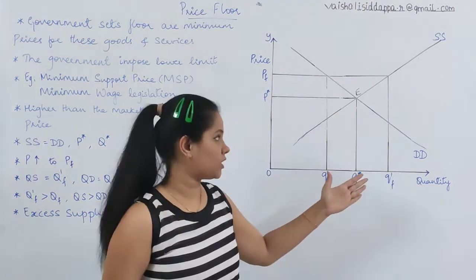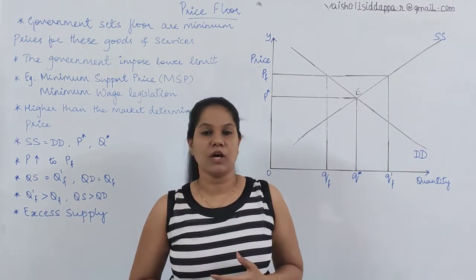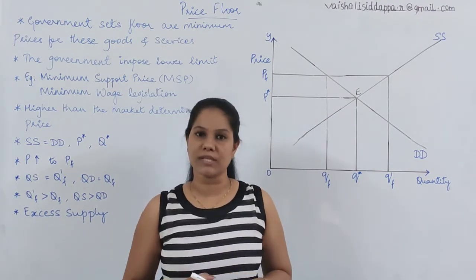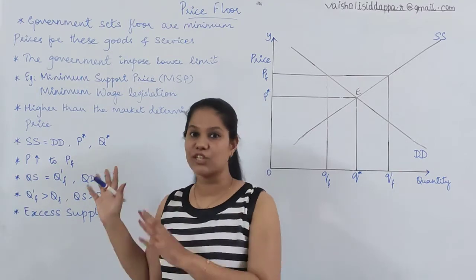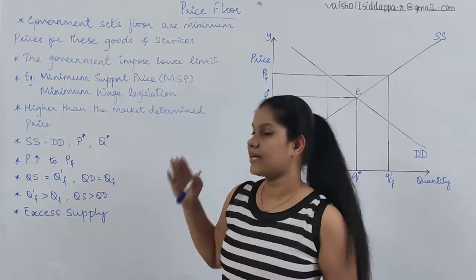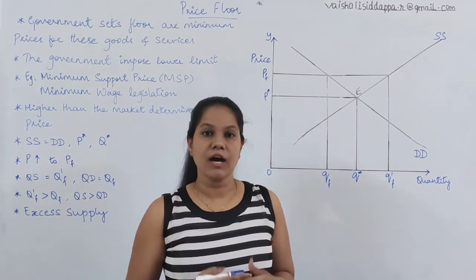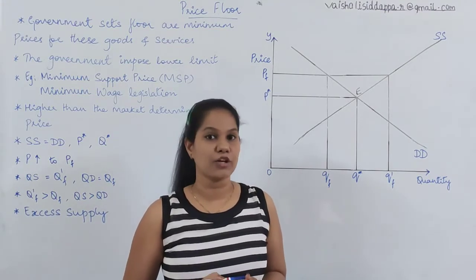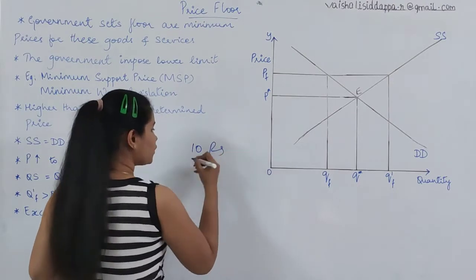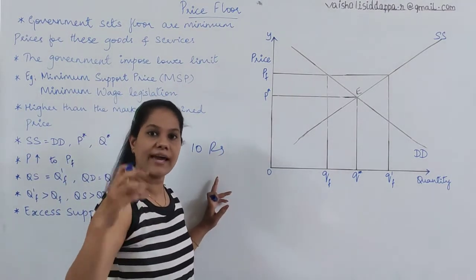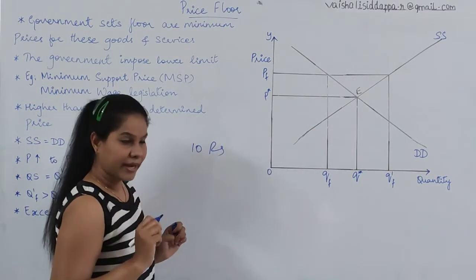Let me explain what exactly MSP is — minimum support price. Usually in general, you have probably seen your parents or any family member when they are going to visit any market and buy vegetables. This is related to the agriculture sector. When you visit a market and you want to purchase a tomato — if I am a big farmer producing tomatoes by spending 10 rupees, and because of equilibrium the market price is really less — the demand and supply are equal at a price of 8 rupees, but the actual cost is 10 rupees.